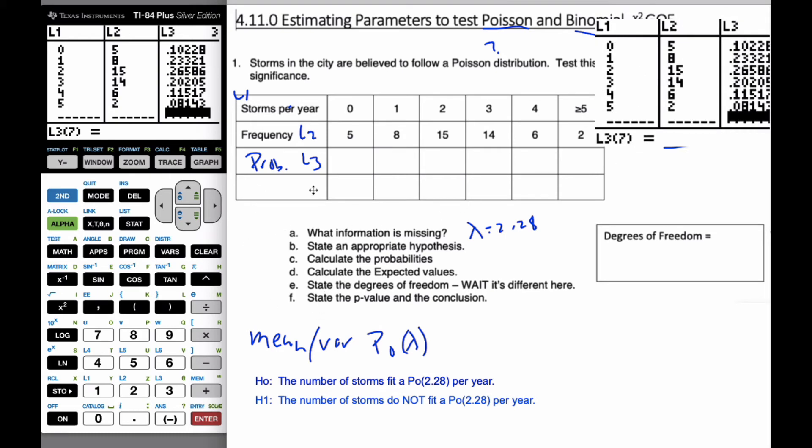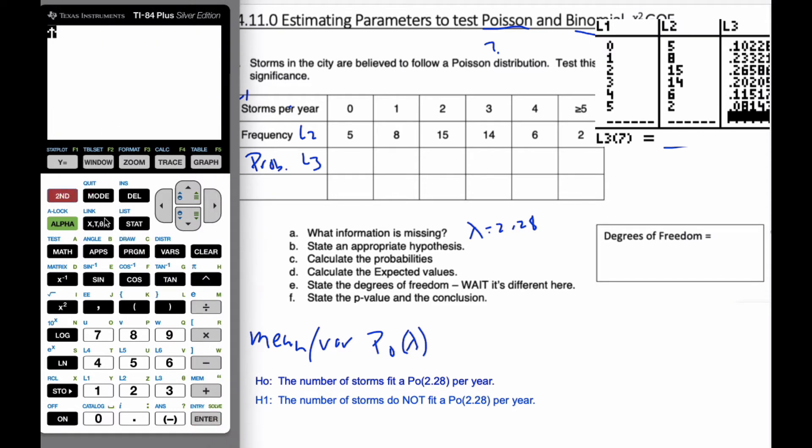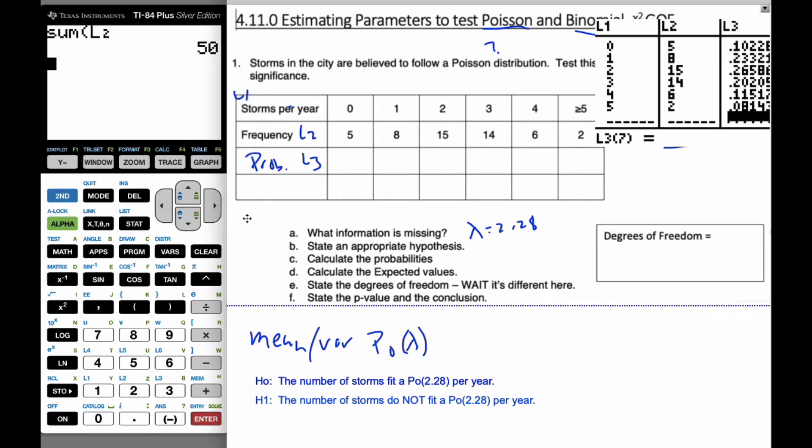Okay, so now I need to find my expected values. Well, I have to know how many storms I have for the cities overall. And so I want to add up L2. So one of the things I can do is, if I go to second list, and I'm going to go to math, I'm going to sum up L2, which are all my total number of storms. So there are 50 storms this year. And so I have 50 storms. So I'm going to take these probabilities and I'm going to multiply them times 50.